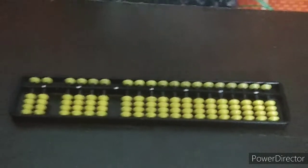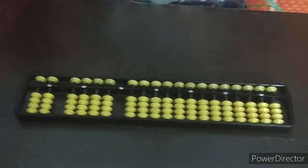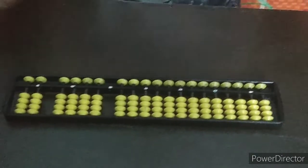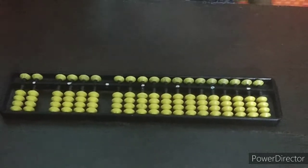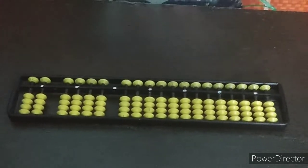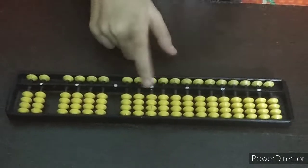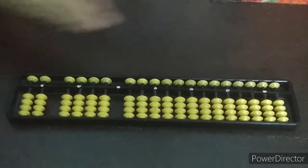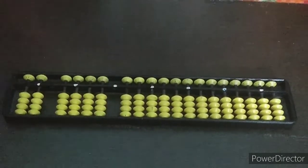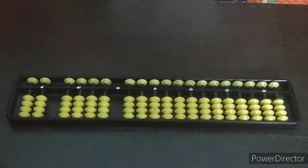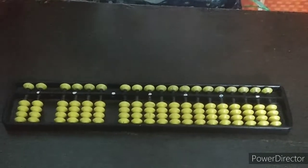So guys, this is our Abacus and now let's start counting on it. Remember one thing that the Abacus has 7 starting points and we always start from the middle one. This is the middle one. The lower beads value 1 each and the upper beads 5 each.